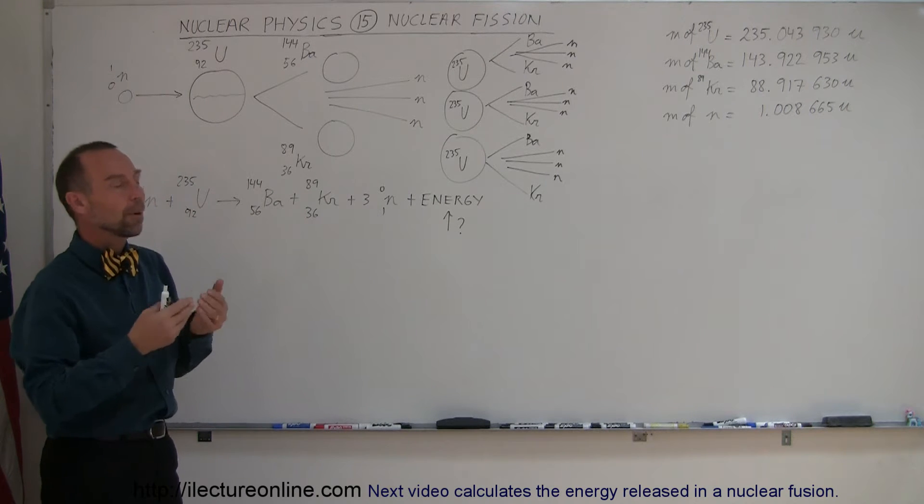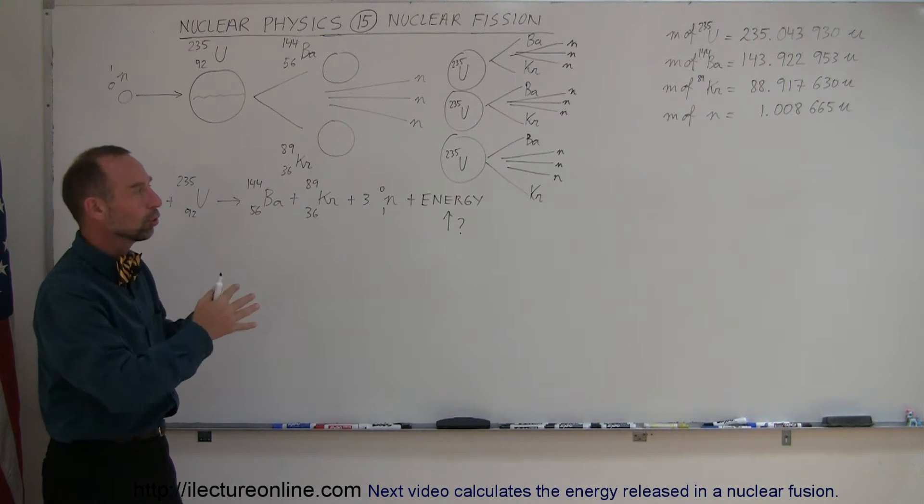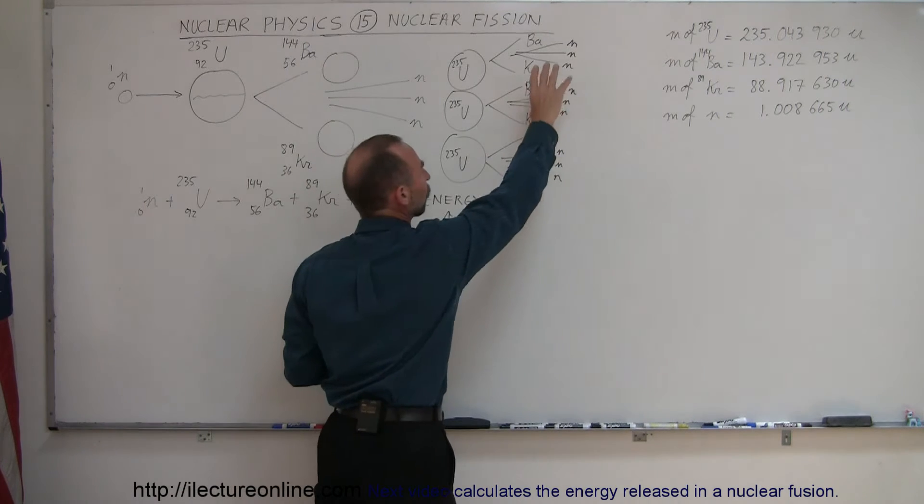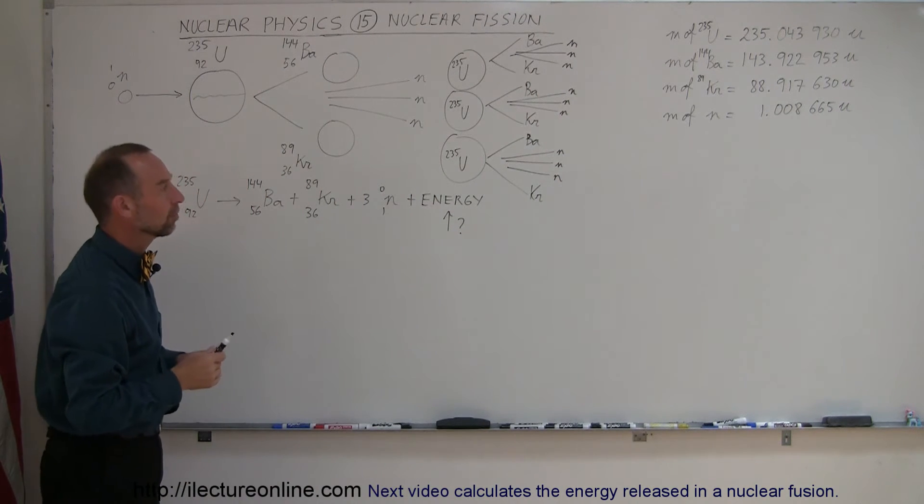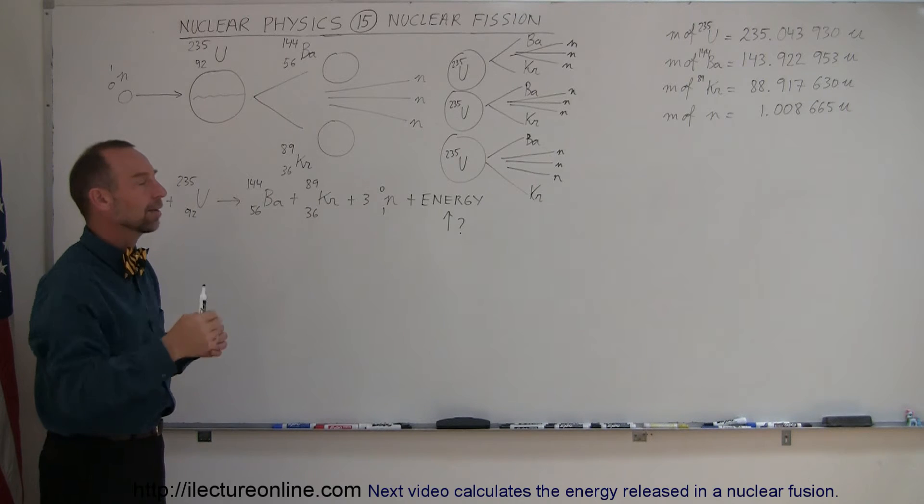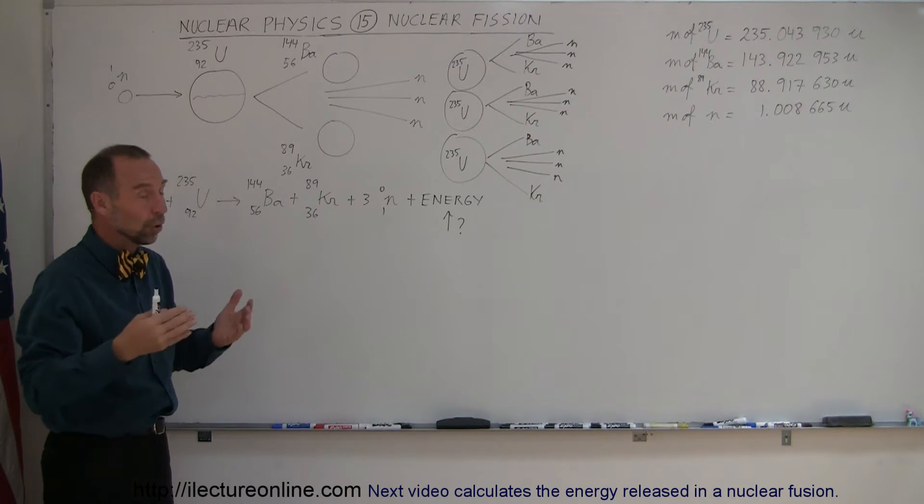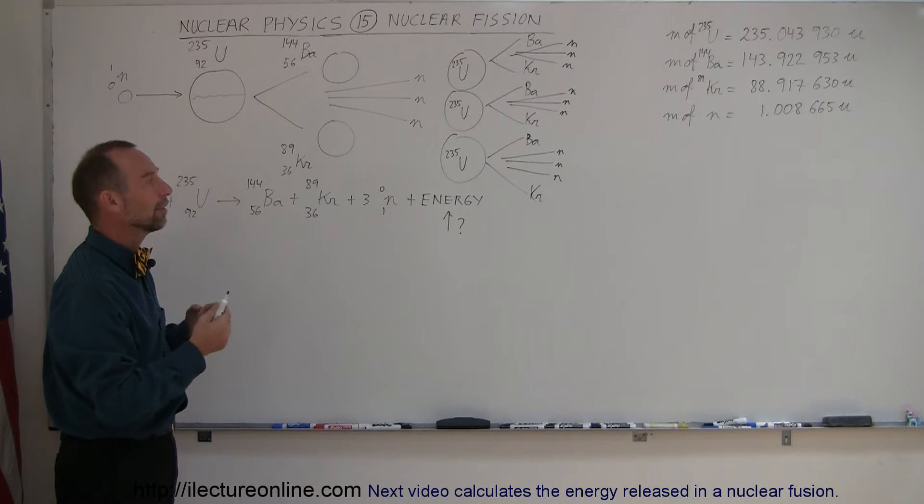And so, in a nuclear power plant, this reaction is controlled by eliminating certain numbers of these neutrons using control mechanisms so that the reaction doesn't get out of hand. And of course, in a nuclear weapon, you don't want that to happen. You want the whole weapon to go off. You want all the uranium to fission very quickly and have an enormous amount of energy released.